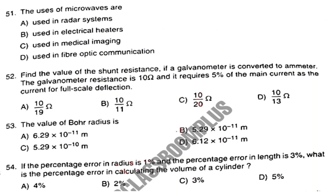Question number 51. The uses of microwaves are: Option A, used in Radar System; Option B, used in Electrical Heaters; Option C, used in Medical Imaging; Option D, used in Fiber Optic Communication. Answer is Option A: Used in Radar System.